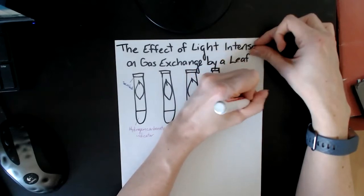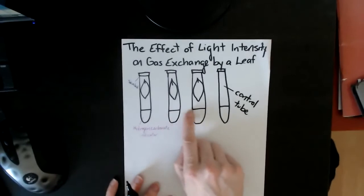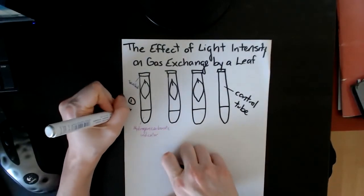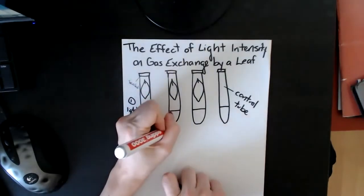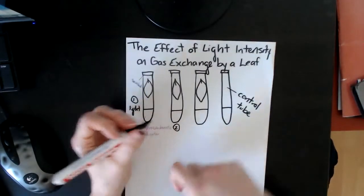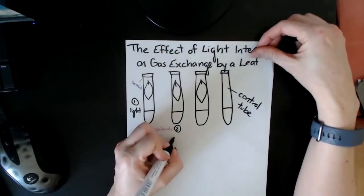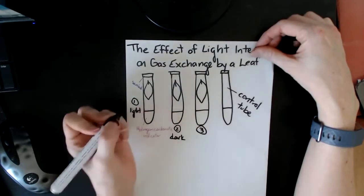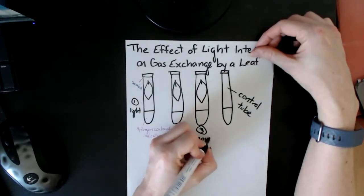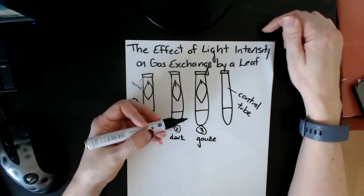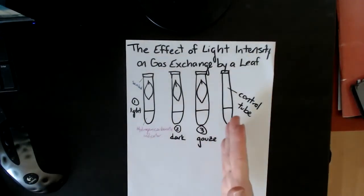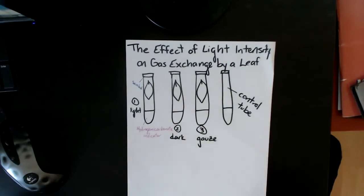The idea is that you take each of these three tubes with a leaf. For example, the first one you would leave in the light. The second one you would wrap in tinfoil or put it in the dark so that there's no light getting to it. And then the third one you would wrap in perhaps some gauze, and the idea is that the gauze allows some light through but not very much. So you have three different light intensities here.